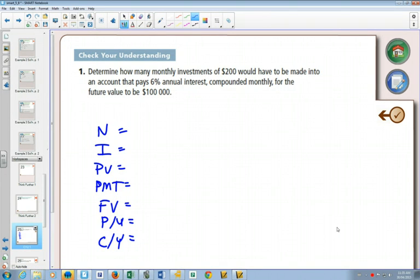In this question, how many monthly investments of $200 would have to be made into an account for the future value to be $100,000?